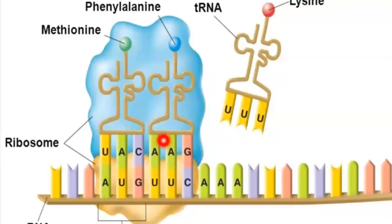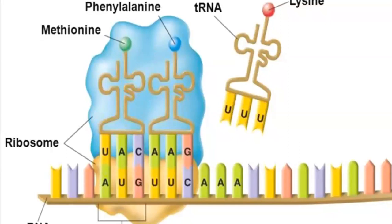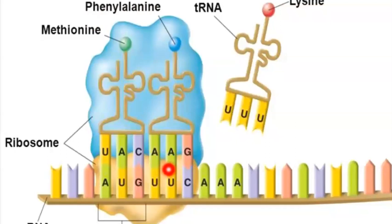Now the ribosome shifts and reads the next codon, which is UUC. The tRNA for UUC must have the anticodon AAG. The second amino acid is phenylalanine — phenylalanine is the amino acid for codon UUC, and UUC has anticodon AAG. This second amino acid is brought to the site.